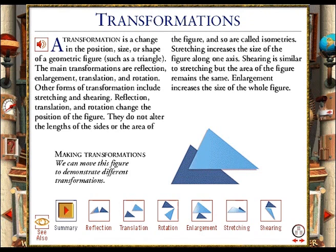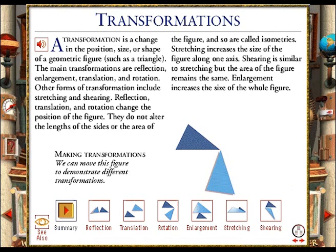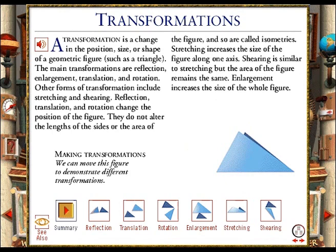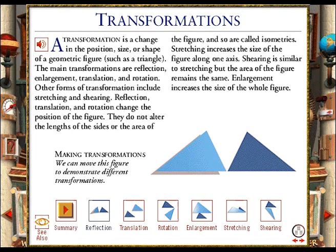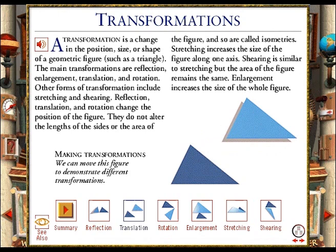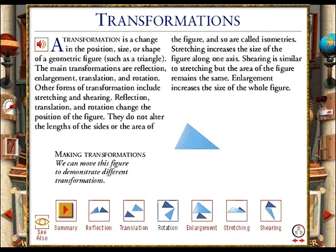Transformations such as reflection, translation, and rotation change the position of a geometric figure. Enlargement and stretching increase the size of the figure. Shearing changes the shape of the figure, but its area remains the same. Reflection mirrors the figure in a straight line. Translation moves the figure to another point without rotating it or changing it in any other way. Rotation turns the figure around a point or axis.